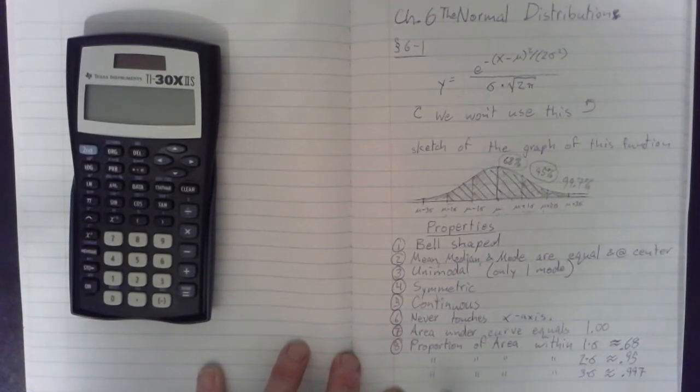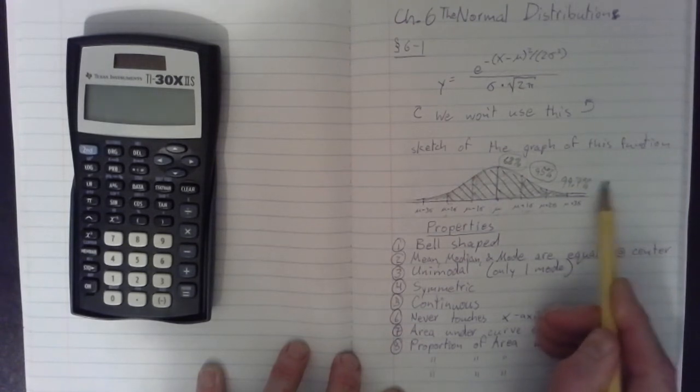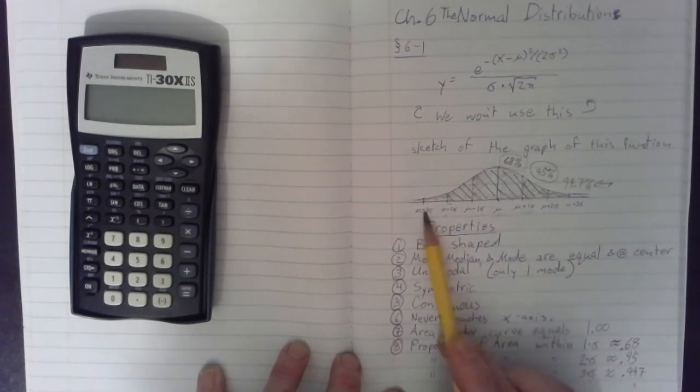All right? And then, finally, the proportion of area within 3 times sigma is equal to approximately 0.997. So, that means 99.7% of the area is contained within three standard deviations away from the mean.